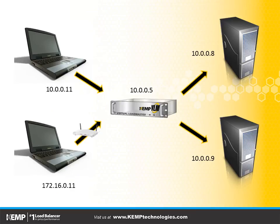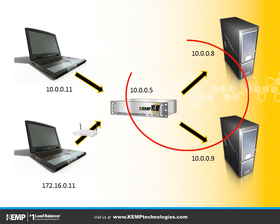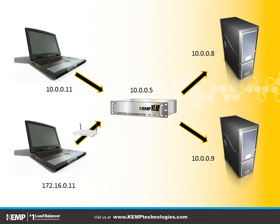So for the single arm setup, the load balancer has only one interface. In this case we see it's 10.0.0.5 — that's where the virtual service is running. You would also notice that the servers are on the same subnet as the virtual service 10.0.0.5. The servers here, as you can see, are 10.0.0.8 and 10.0.0.9.